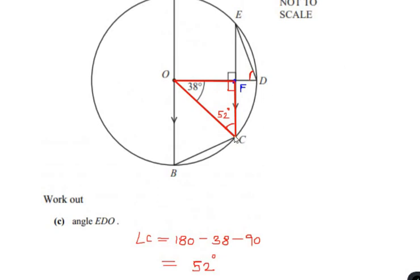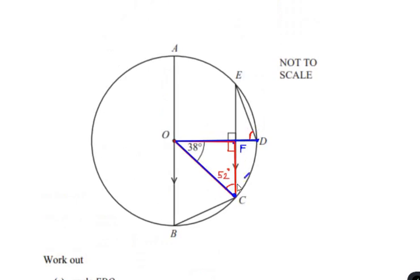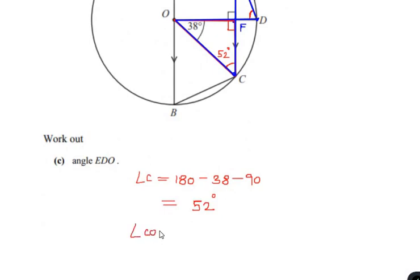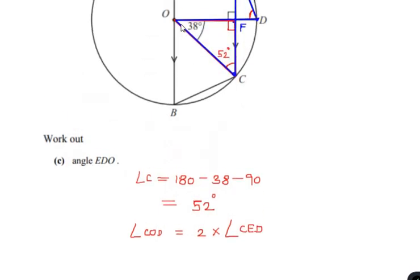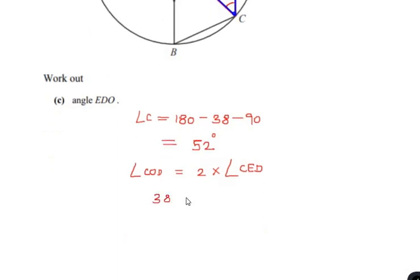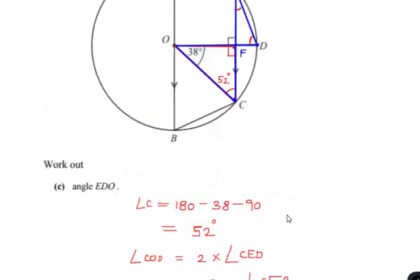Let us apply this theorem. Points C and D make an angle at the center of the circle at point O, and the same two points make an angle at the circumference at point E. So angle COD at the center equals two times angle CEB. Since the center angle is 38 degrees: 38 equals 2 times angle CEB, so angle CEB equals 38 degrees divided by 2, which is 19 degrees.